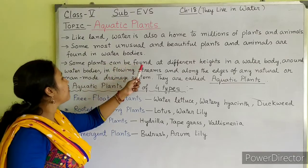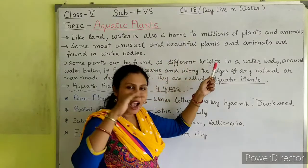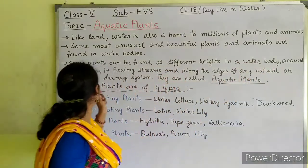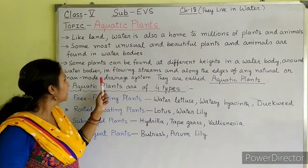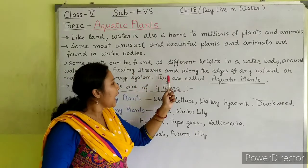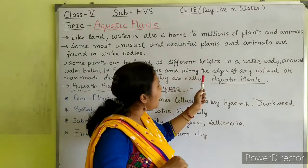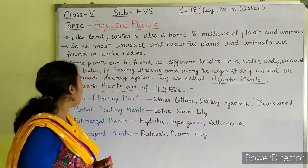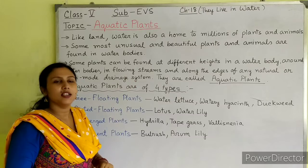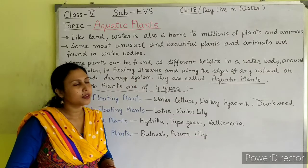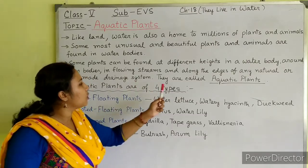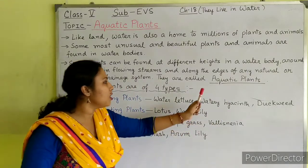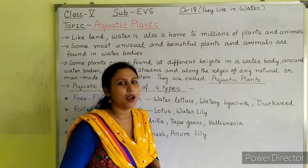Some plants can be found at different heights in a water body — around water bodies, in flowing streams, and along the edges of any natural or man-made drainage system. They are called aquatic plants.